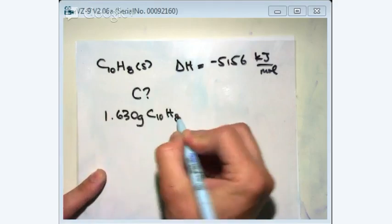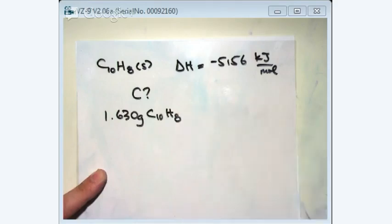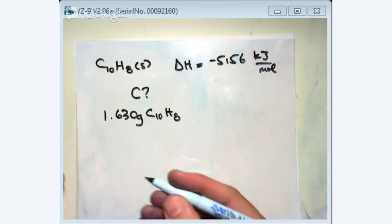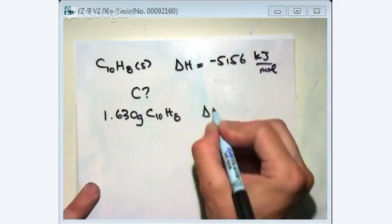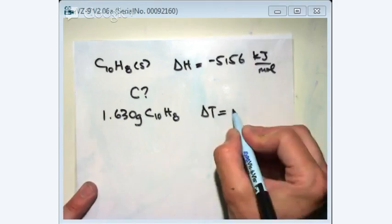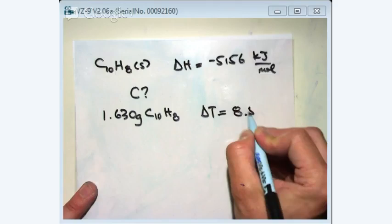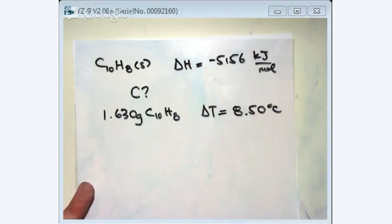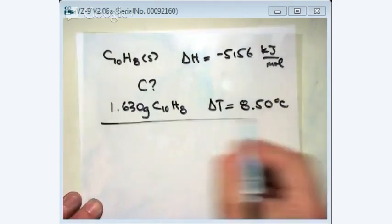And it's in a bomb calorimeter. It must have been in a bomb calorimeter because it said combustion. Most likely it's a bomb calorimeter, so it didn't have to state that, and then it said there's a temperature increase. It's always an increase. If it wasn't, it would be pretty weird in a bomb calorimeter, 8.50. So often they give you delta T.